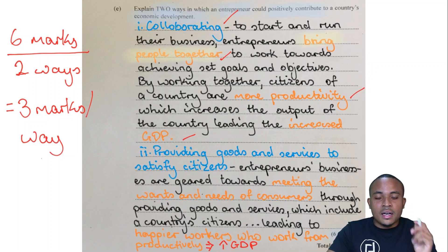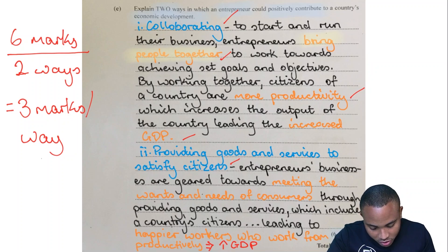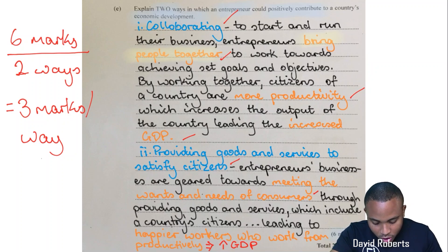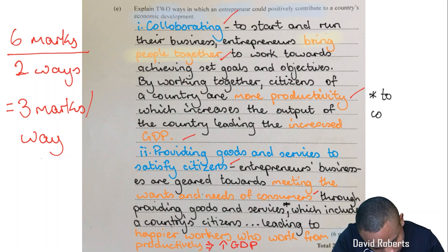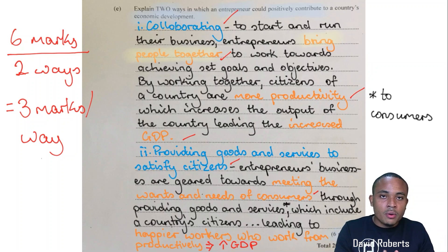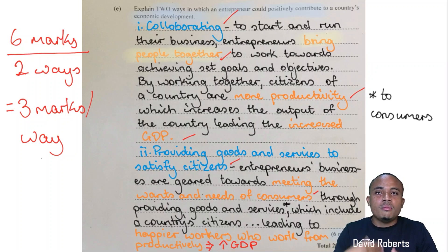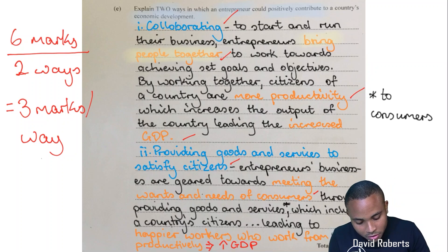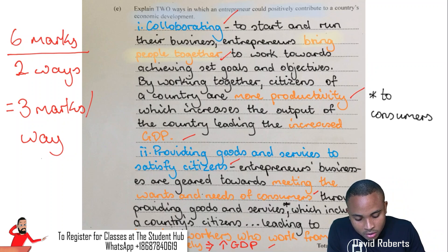The second way is by providing goods and services to satisfy citizens — that's one mark. Entrepreneurs' businesses are geared towards meeting the wants and needs of consumers, including the country's citizens. When citizens' wants and needs are satisfied through goods and services provided by entrepreneurs, they'll be happier, and happier citizens are assumed to be more productive within the country, leading to increased GDP.